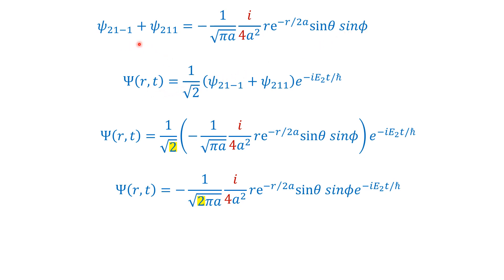This result is for time t=0. For any later time, Ψ(r,t) = 1/√2 times this sum of the two wave functions, multiplied by the time factor e^(−iE₂t/ℏ). We use E₂ because the quantum number n equals 2 in both wave functions, so the energy is E_n = E₂.